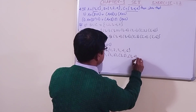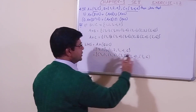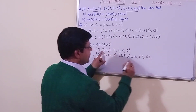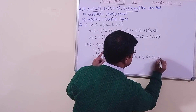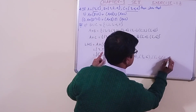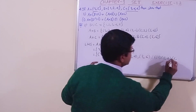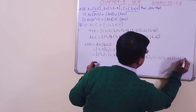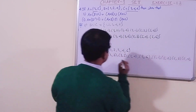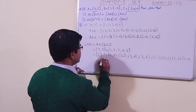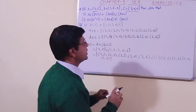Continuing with A cross (B union C): we also get (3,6), then with 5: (5,1), (5,2), (5,3), (5,4), and (5,6). So the left-hand side is fully solved.